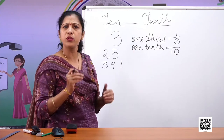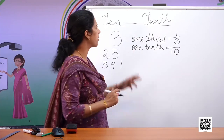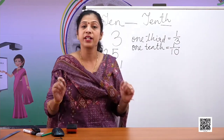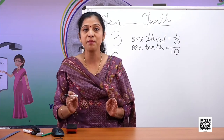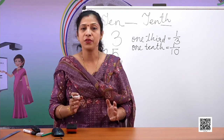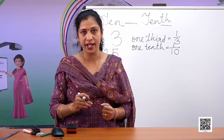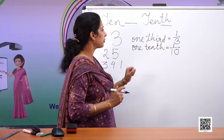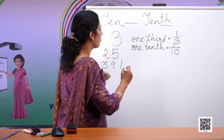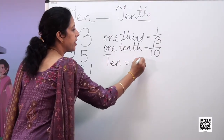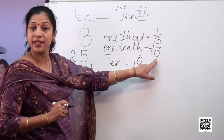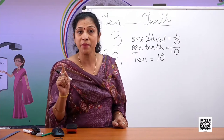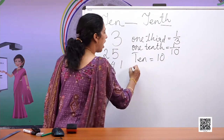I can write down two tenths, three tenths, four tenths — I will just change the numerator but the denominator will always remain ten. So the difference is: ten is a whole number written like this, whereas tenth is written as one out of ten. Ten is not the same as tenth.